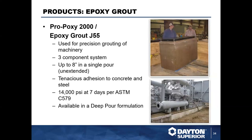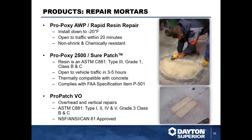Pro Fill AW is a two-component polyurea, self-leveling, low-viscosity product for heavy traffic and freezer applications, installable in temperatures from -40°F to 120°F. Pro Poxy 2000 and J55 are used for precision grouting and machinery base plates — a three-component system, pourable up to eight inches in a single pour, with tenacious adhesion to concrete and steel at 14,000 psi, making it ideal for machinery base plates and heavy equipment subject to vibration.